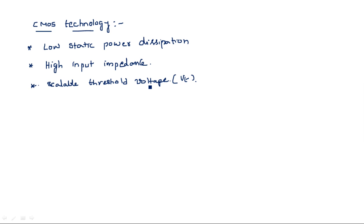In contrast, in bipolar technology, once the transistor is fabricated, we cannot change the cut-in potential — it is fixed at 0.3 or 0.2 V for germanium and 0.7 or 0.8 V for silicon. But in CMOS technology, we have the feasibility to change the threshold voltage through the body bias effect, where a biasing potential is used to adjust the threshold voltage.